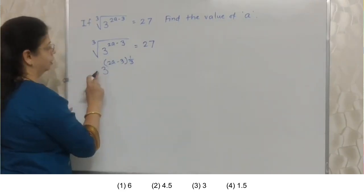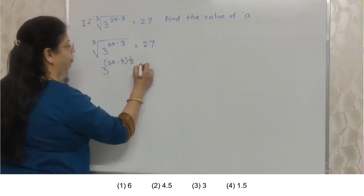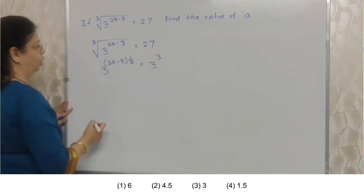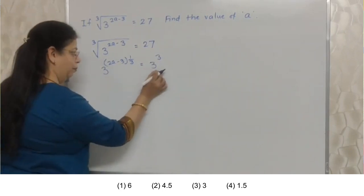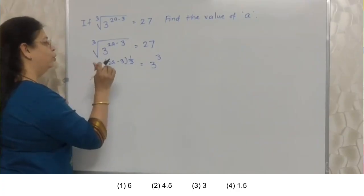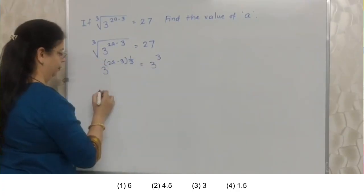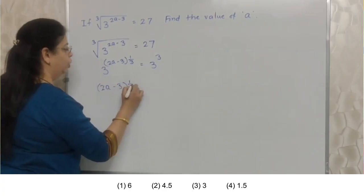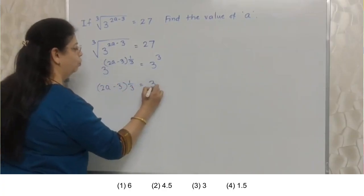This is the deciding factor for the accuracy of this sum. Now, since here the base is 3, even we need to write this number also as the base of 3. So, 3 cube. Now, base are same. So our job is very very easy. We have to just take the index.